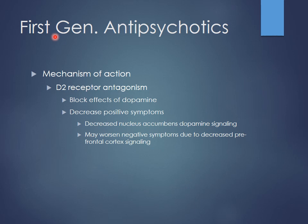Looking at first-generation antipsychotics — Haldol is a big one. Risperdal is actually an atypical, not a first-generation. These first-generation agents are really side-effect prone. We don't use them as often as the atypicals now, but it's important to have familiarity with them. They work primarily by blocking D2 receptors, and they're mainly effective for positive symptoms. They're really good for acute psychotic episodes — patients coming in with hallucinations, becoming very aggressive.